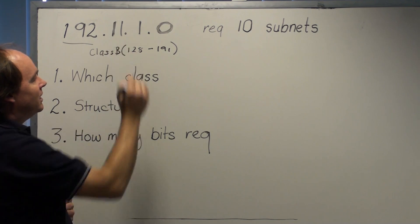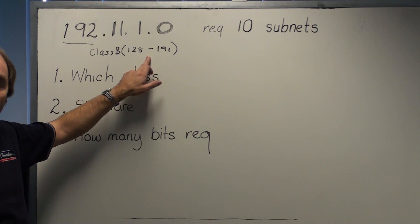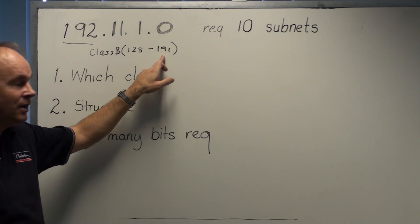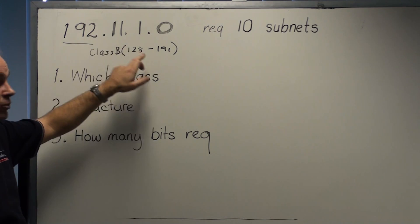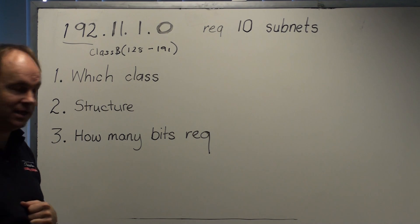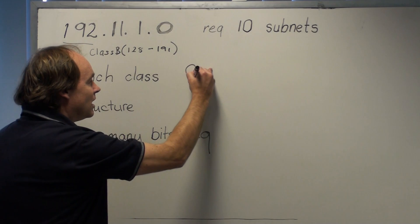That's class B. So I know that A would be below 128, C is above 191. In this case 192 would therefore belong to C. So we must establish our class. In this case class C.